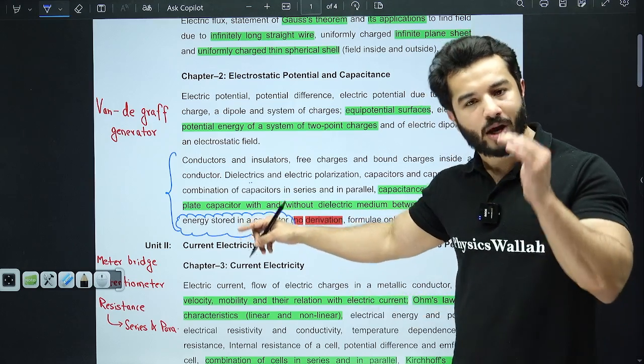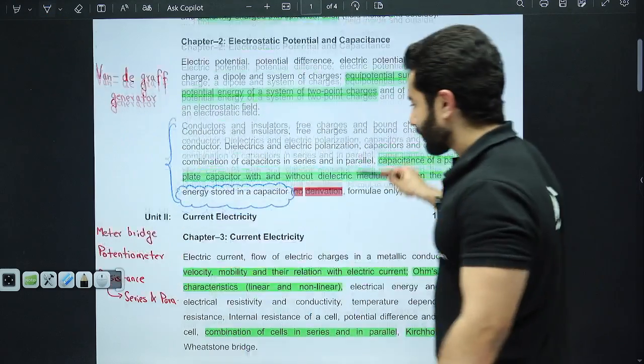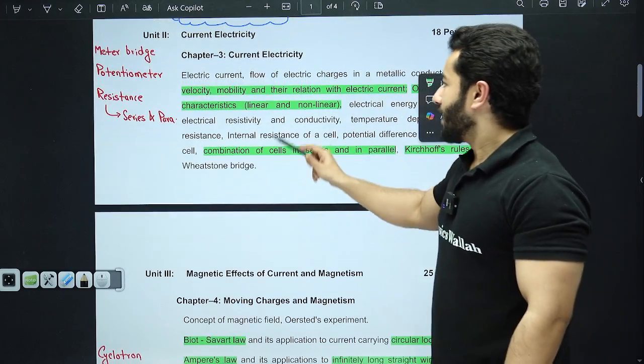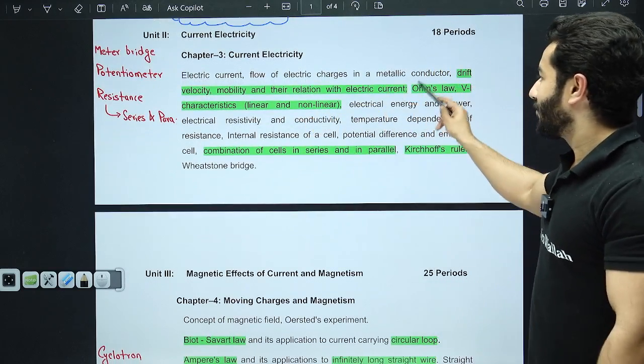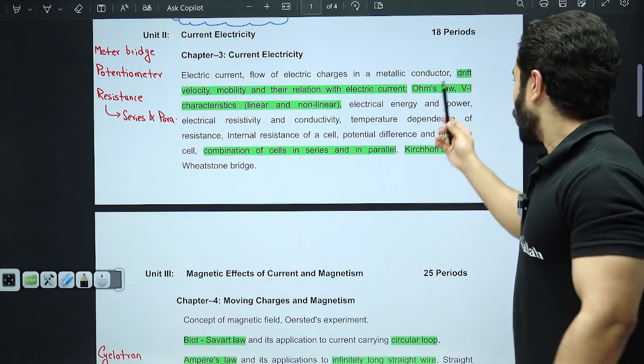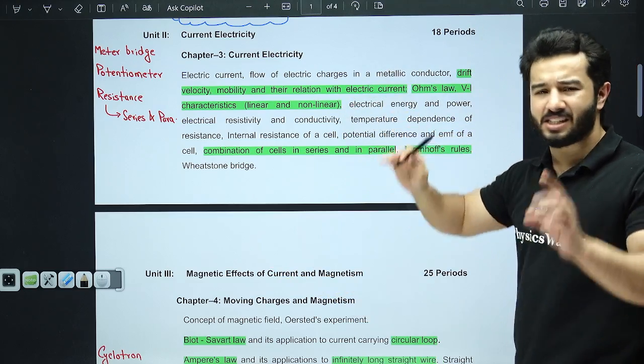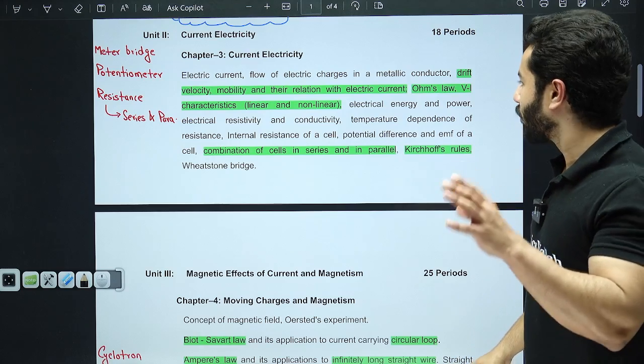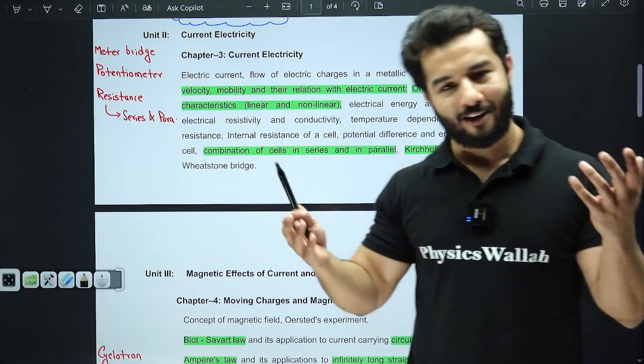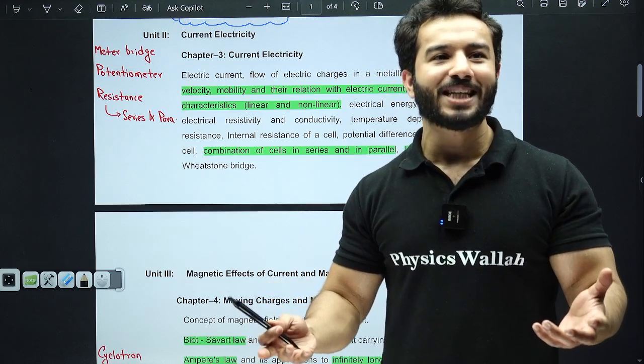Moving on, next is current electricity. From current electricity, drift velocity, mobility, and their relation with electric current—this is actually just one topic that is drift velocity and current. Ohm's law, from drift velocity till this point, this is almost one topic, so this is very important. I am not talking about each and everything because else you will say sir, everything is marked green, everything is important.